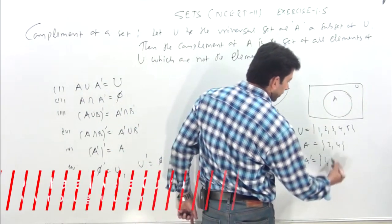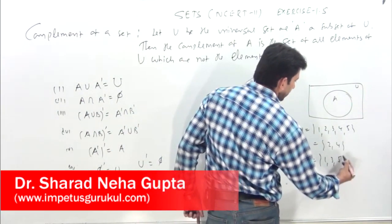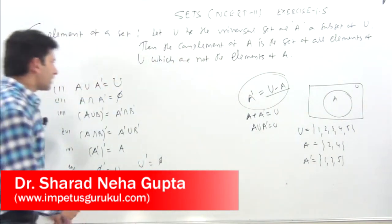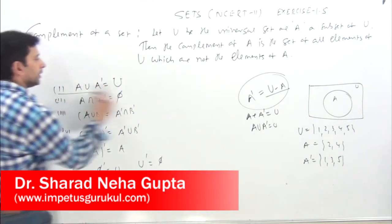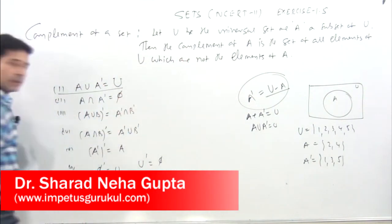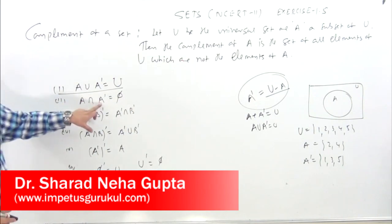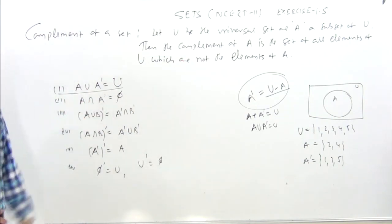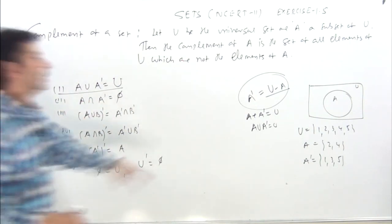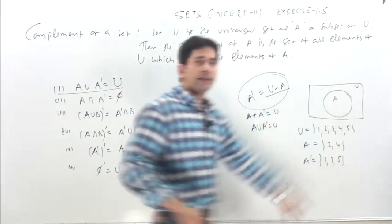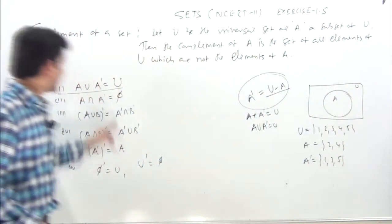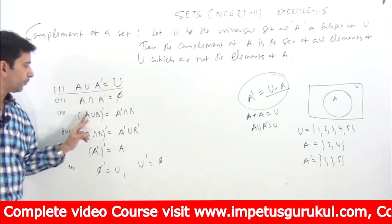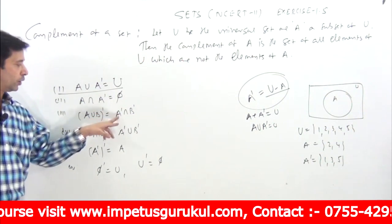Jo elements A mein hain unko chhodke jitne bhi elements remaining rahenge, is called complement of set. To complement of A kya jayega: {1, 3, 5}. Kuch basic properties: A union A complement equals universal set. A intersection A complement equals empty set, because kuch bhi common nahi hoga A aur A complement mein.